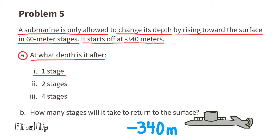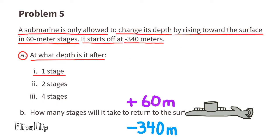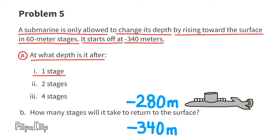After the first stage, it rises 60 meters. Negative 340 plus 60, that equals negative 280 meters. So after the first stage, the submarine is located at negative 280 meters, or 280 meters below the ocean's surface.